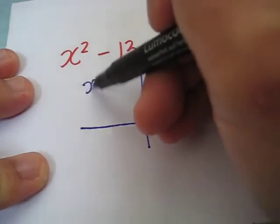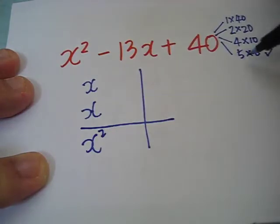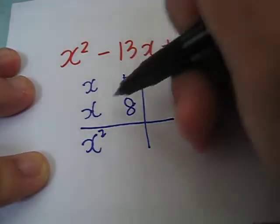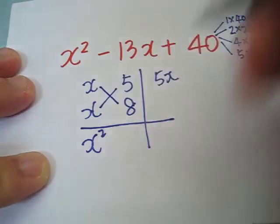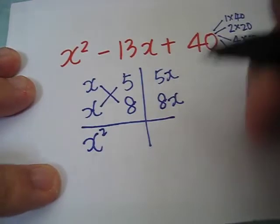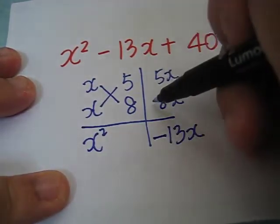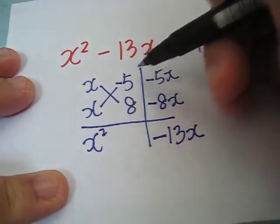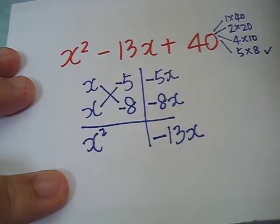x squared is the same as x times x. We try 5 times 8. Now, 5 and x will give me 5x. Here, we get 8x. From 5x and 8x, we could get negative 13x if both are negative, which will translate to x times negative 5 to give us negative 5x and x times negative 8 to give us negative 8x.